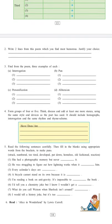Five. Read the following sentences carefully, then fill in the blanks using appropriate words from the brackets to make puns. The words in the brackets are: struck, numbered, too tired, developed, put down, homeless, old-fashioned, reaction. 1) She had a photographic memory but never [dash] it. 2) He was struggling to figure out how lightning works when it [dash] him. 3) Every calendar's days are [dash]. 4) A bicycle cannot stand on its own because it is [dash]. 5) I am reading a book on anti-gravity. It is impossible to [dash] the book. 6) I would tell you a chemistry joke but I know I wouldn't get a [dash]. 7) What do you call Watson when Sherlock isn't around? [dash] 8) I would tell a history joke but it's too [dash].